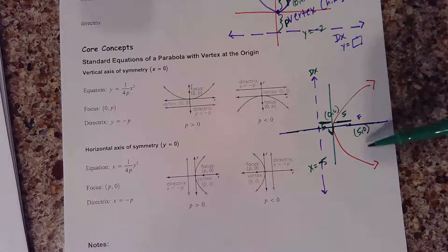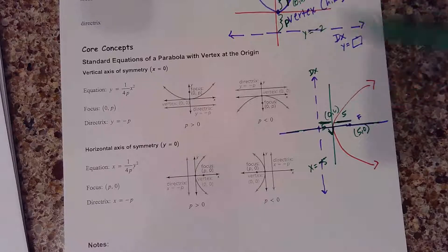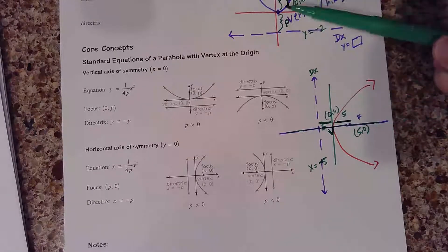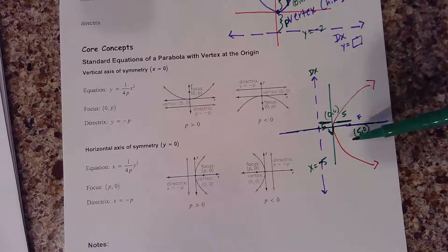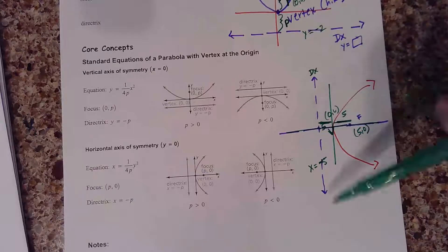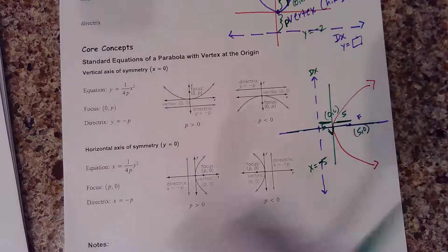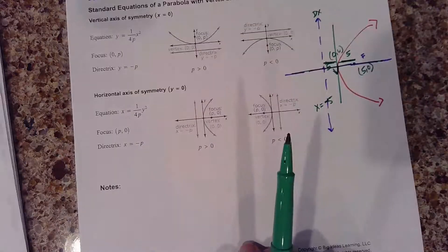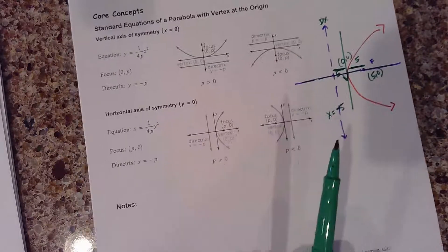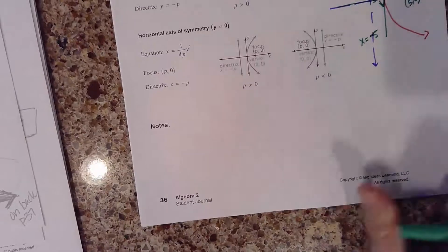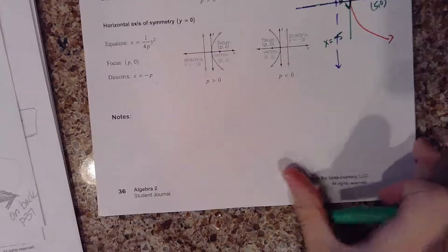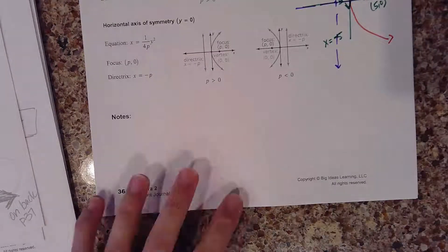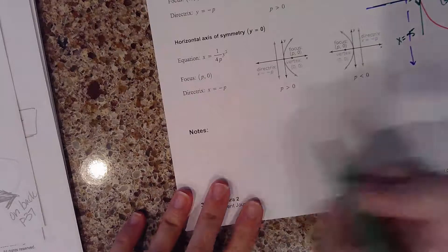The only thing that changes by flipping your parabola is that instead of the focus being on the y-axis when the vertex is at (0, 0), it's now on the x-axis. And instead of your directrix being a horizontal line, it's now a vertical line. I'm going to give you a couple examples. You can write these down or just watch — I encourage you to write them down for future reference. You may need to pause the video to write down the words because I think that's the important part.